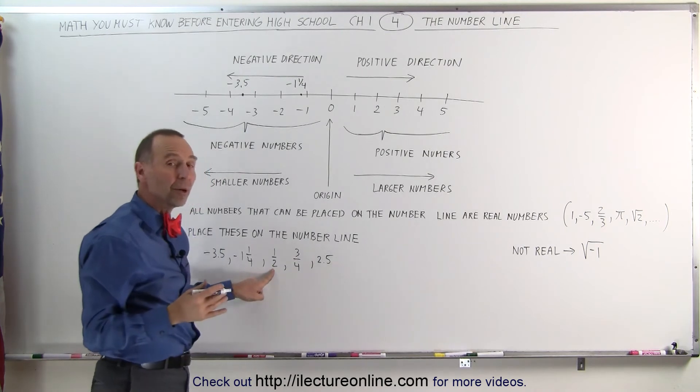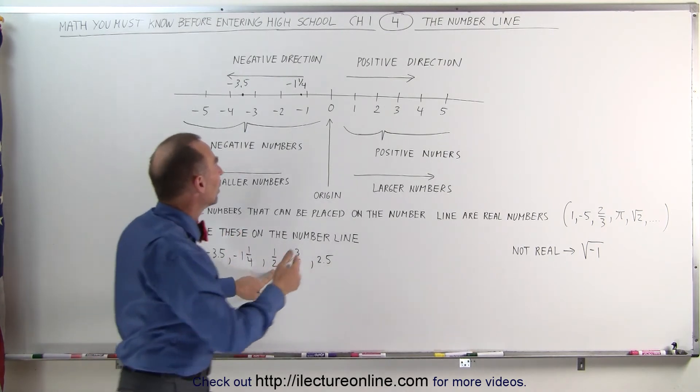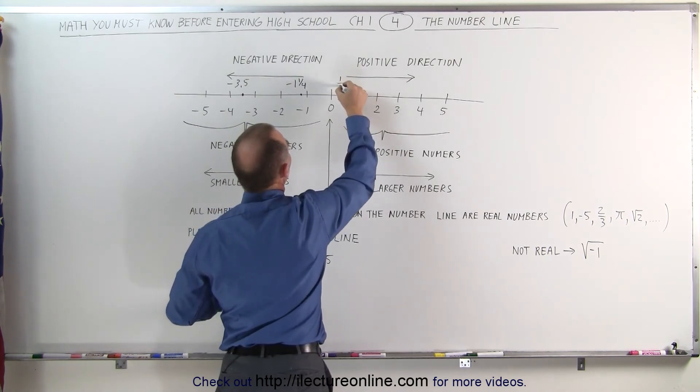The number 1 half is a positive number, it must be to the right of 0. It's halfway between 0 and 1, we place it right there, that's the number 1 half.